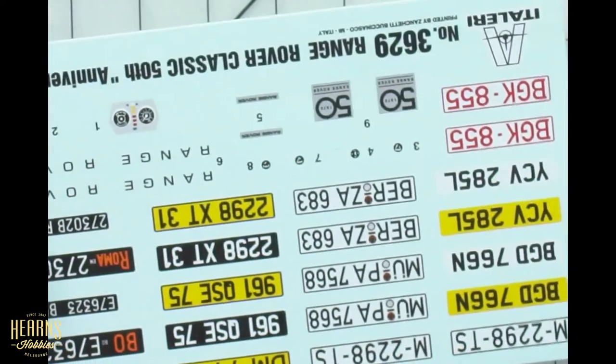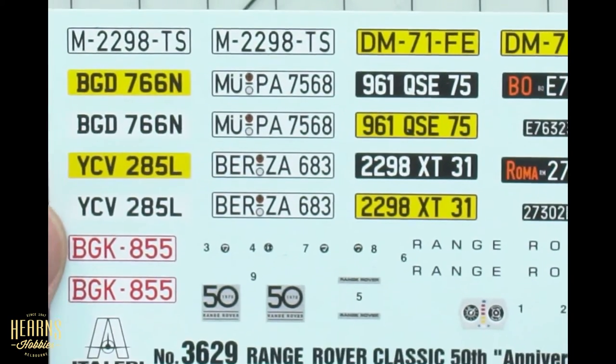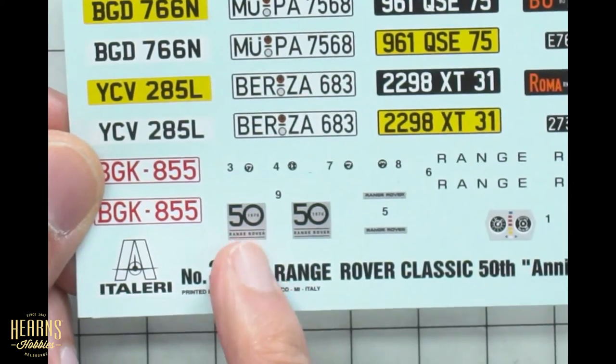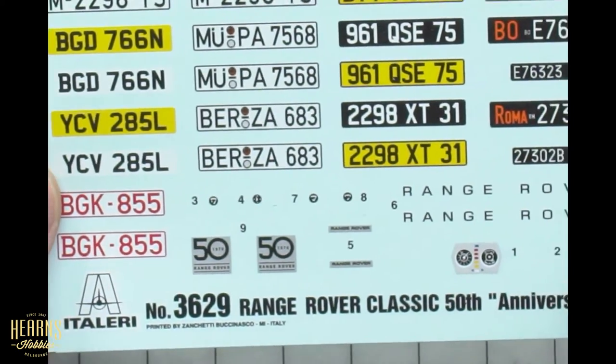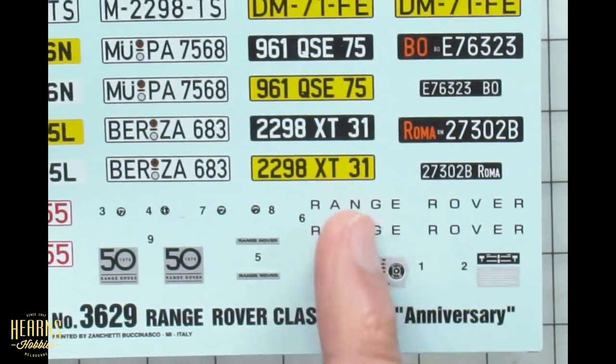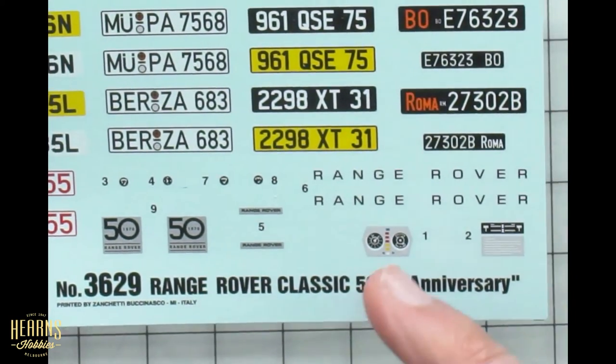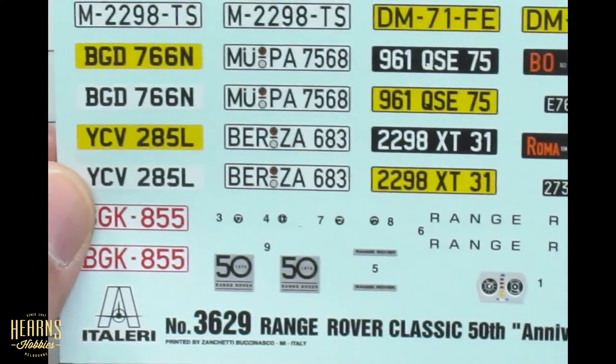That's all the plastic parts. What we've got left is a sheet of decals. There's quite a variety of different registration numbers you can choose from. You've got a 50th anniversary decal there as well, a very recognizable Range Rover which is on the back section of the car, dashboard, and interior parts.